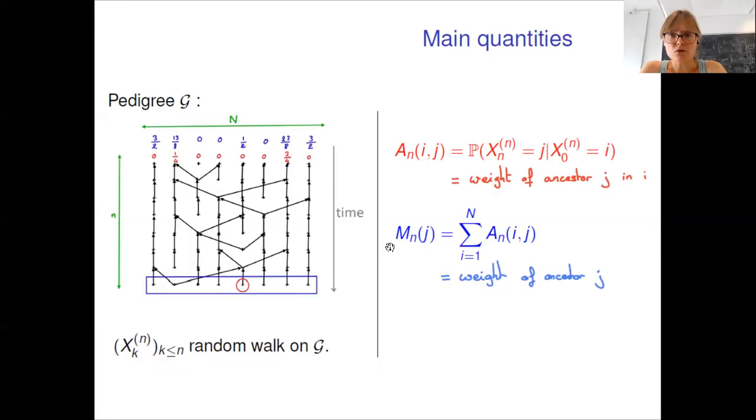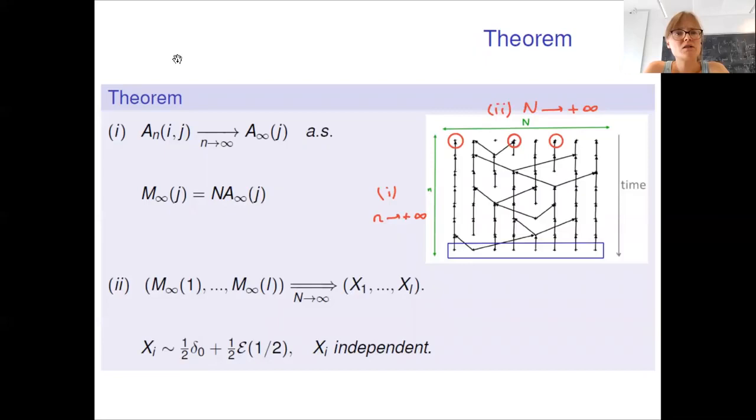Now it's natural to look at the weight of ancestor J in the whole population, which is the sum of ANIJ over all I. As previously, MN of J is a deterministic function of the graph of the pedigree and here I put the weight of all ancestors in the current population. After integrating on all possible pedigrees, MN of J is a random variable and for all J we can prove that MN of J is a martingale. As MN of J belongs to 0N, it converges when small n goes to infinity towards a random variable.